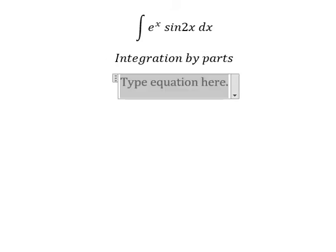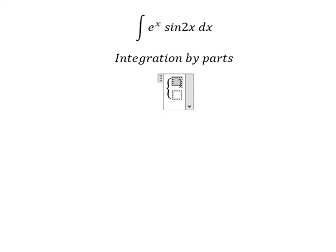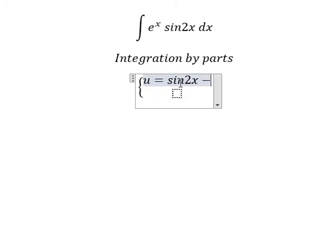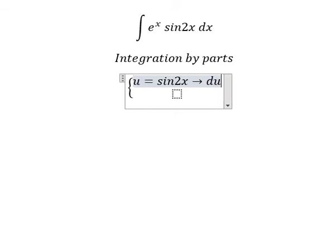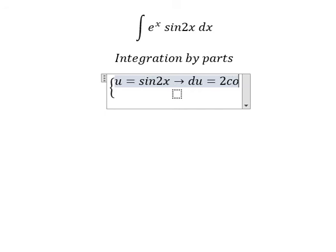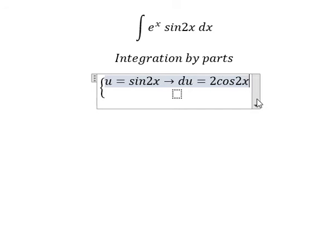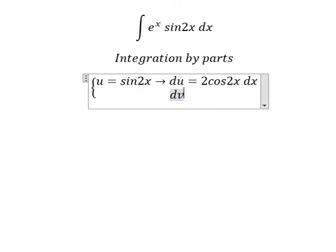We let u equal to sin(2s). Then we take the first derivative of both sides, and we get du equal to 2cos(2s) ds. For dv, we have e to the power of s ds.